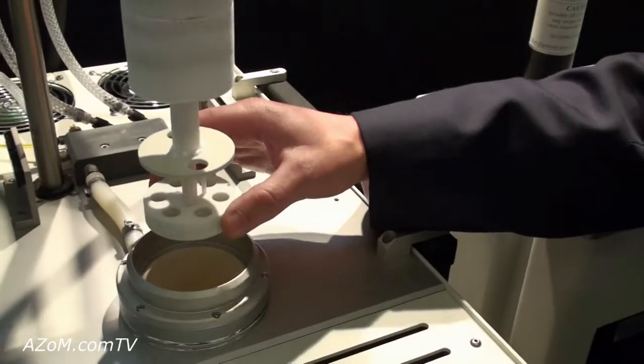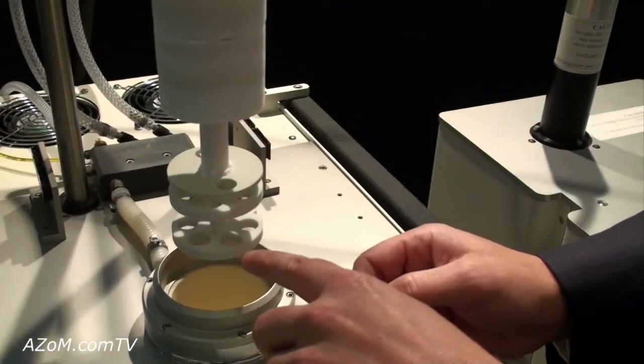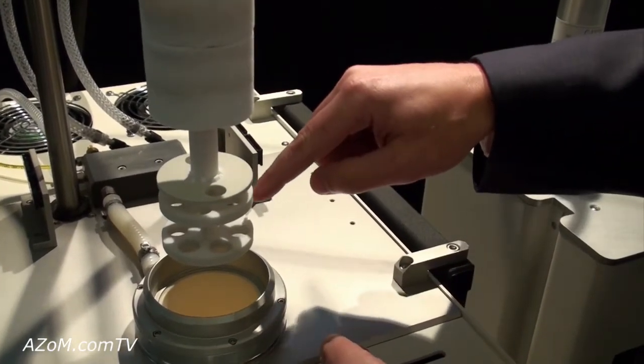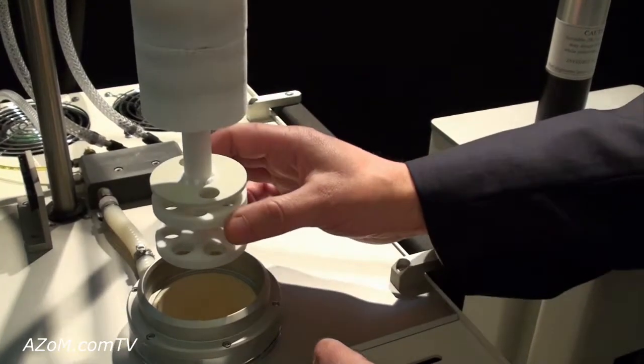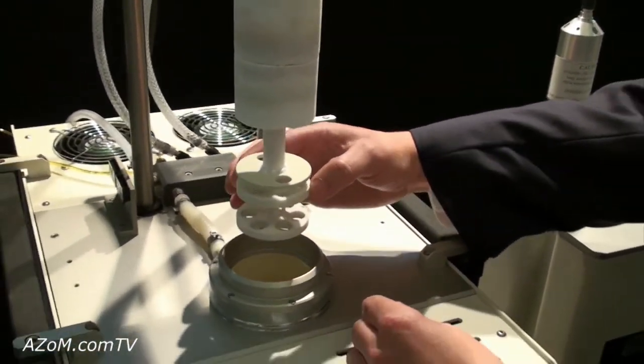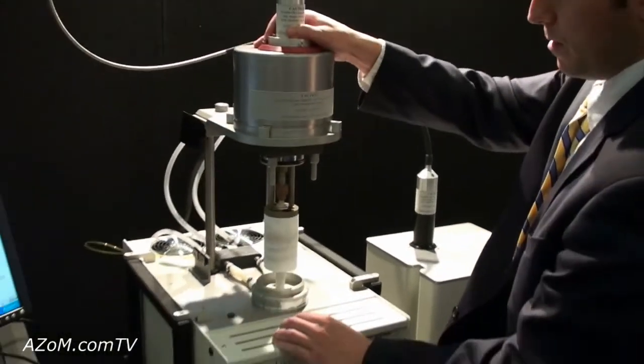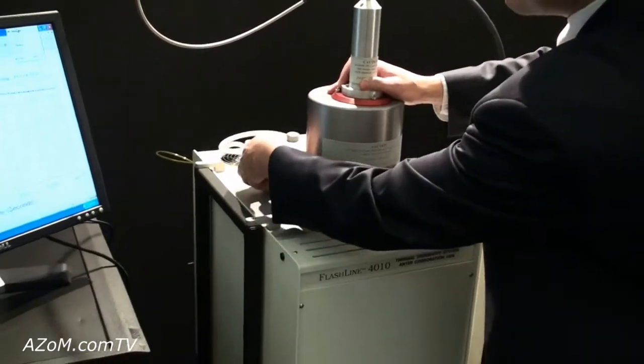Now, it's a simple test. You would take your sample, load it into the carousel. This is a six-sample carousel so you would load five unknown samples and one known reference. You would then close the carousel and you can lower the head into the furnace. Just lock it down.